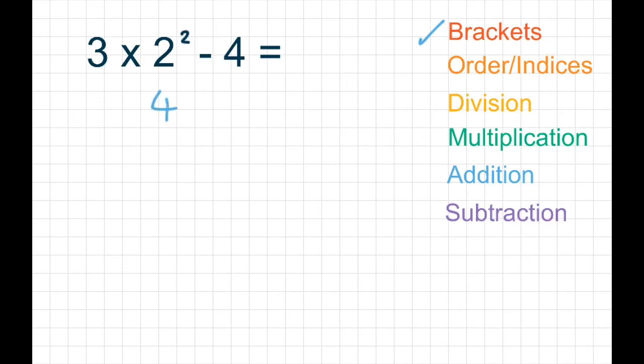We've done our orders and indices. Any division? Nope. Any multiplication? We do have a multiplication symbol, so we need to do that bit next. That would be 3 times 4 is 12. We carry down the next bit and take away 4.